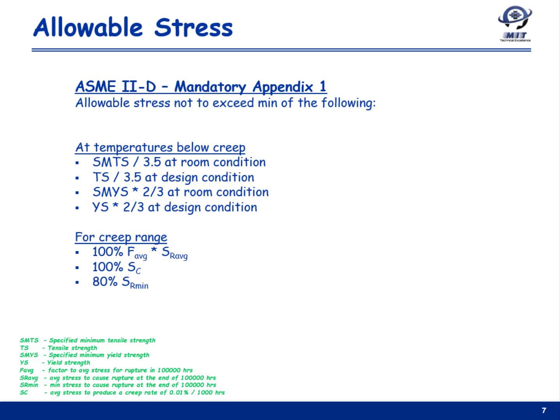At temperatures in the range where creep and stress rupture strength govern, the maximum allowable stress value shall be the minimum of: 100% of the average stress to produce a creep rate of 0.01% in 1,000 hours; 100% of the average stress to cause rupture at the end of 100,000 hours; or 80% of the minimum stress to cause rupture at the end of 100,000 hours.